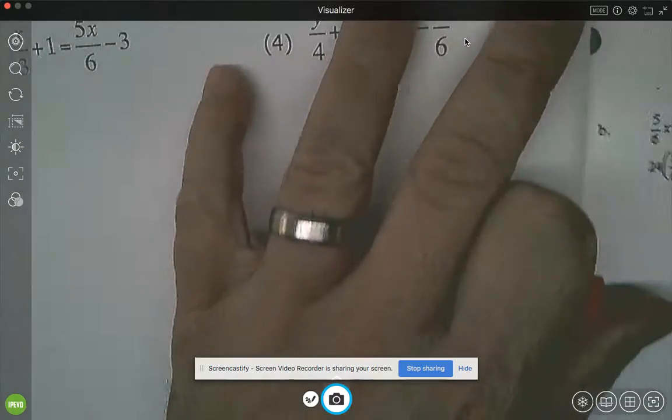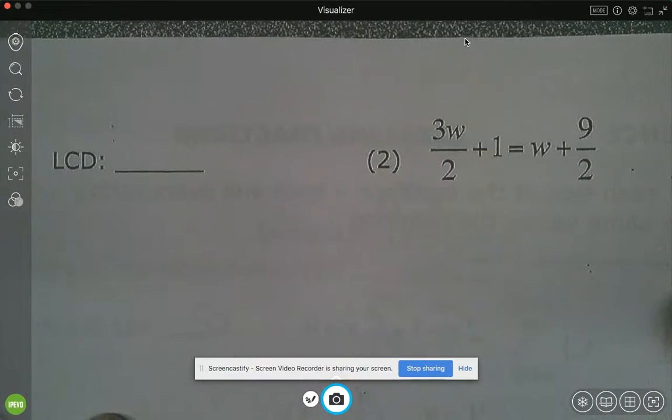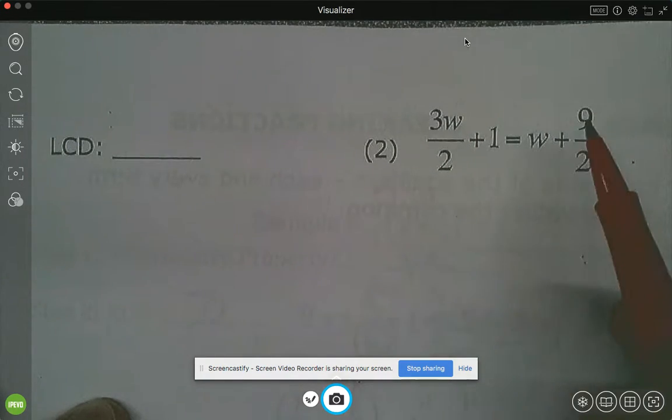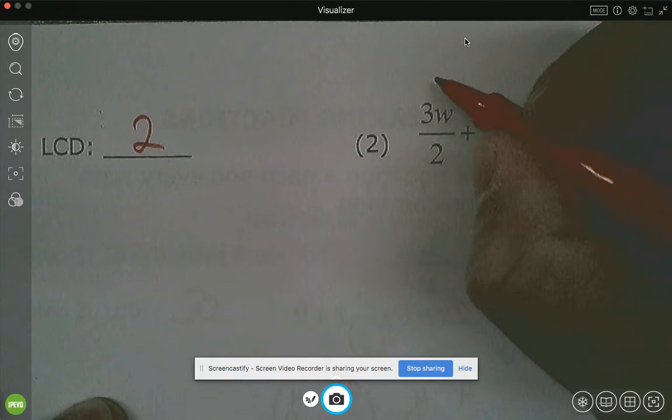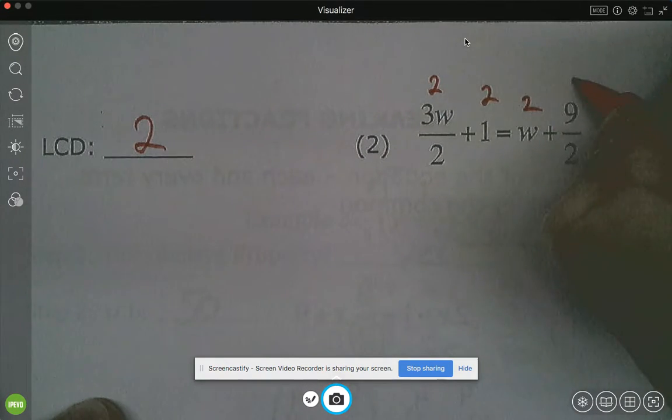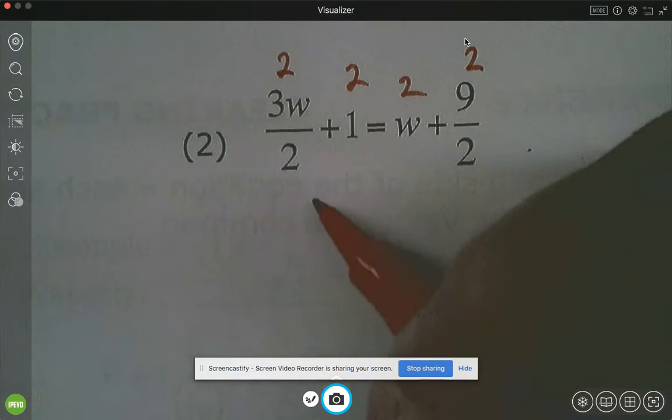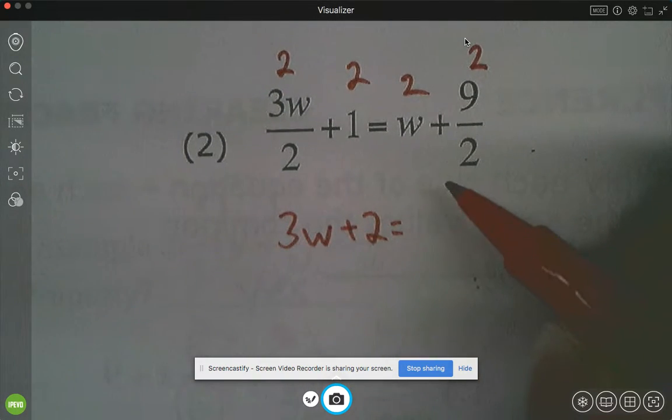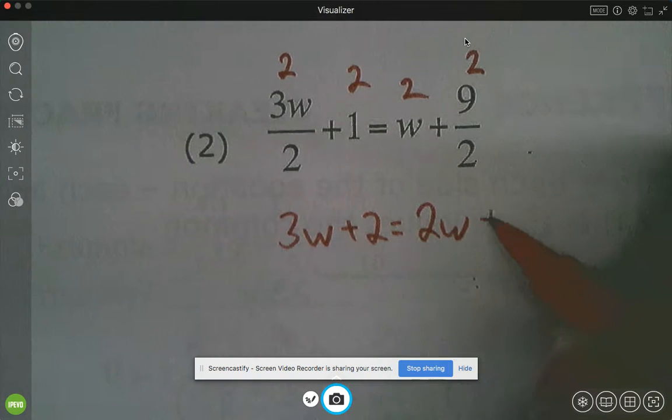So if you turn the page, page 8, let's do this with three more examples here. So for example 2, what's the LCD between 3 halves and 9 halves? It's 2. So we're going to multiply everything by 2. Put little 2s above everything. And someone want to tell me what the left side of the equation would be? 3w plus 2 equals the right side. 2w plus 9.